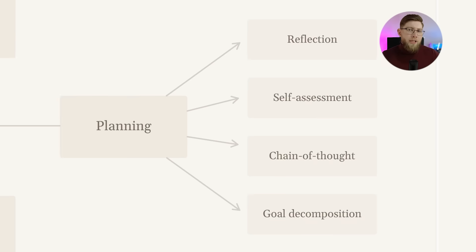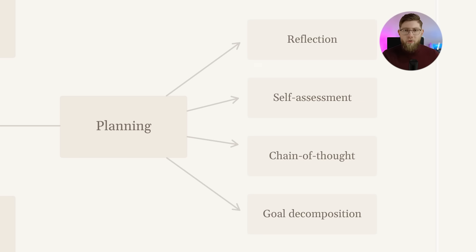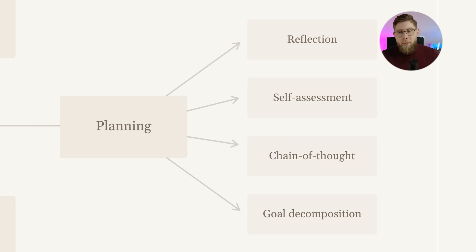Planning. Advanced prompting is what enables planning. Breaking it down further: reflection — an AI agent can reflect on its own answers or actions and adapt its behavior based on that. Self-assessment — it can assess the answer before showing the final result and adapt based on that. Chain of thought prompting and goal decomposition are also very important. All of these are achieved with advanced prompting.